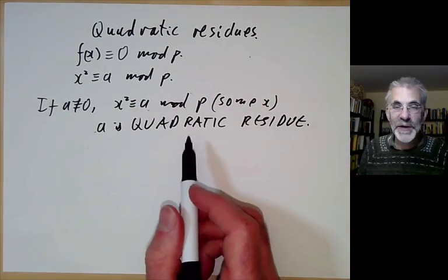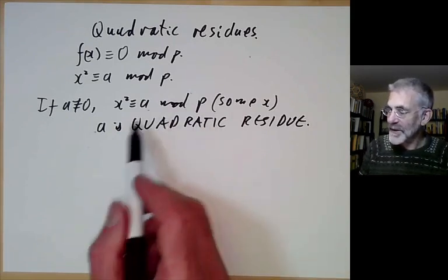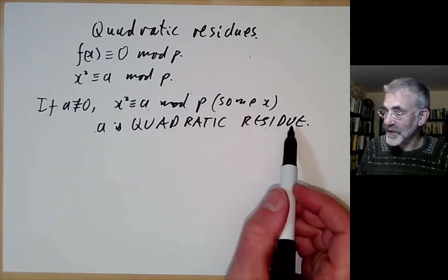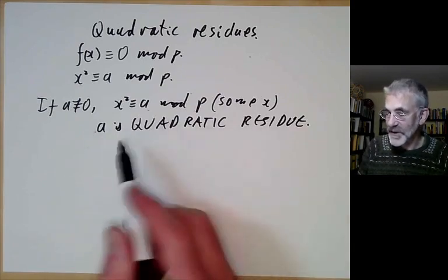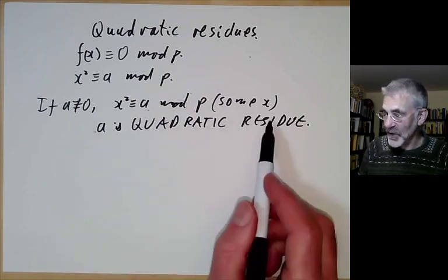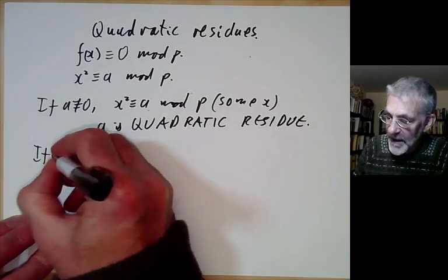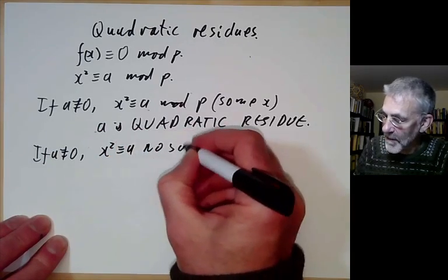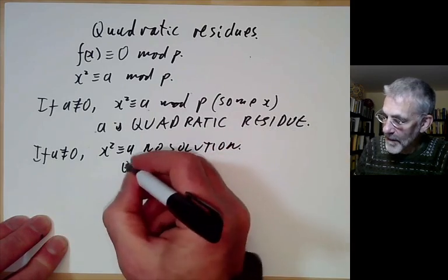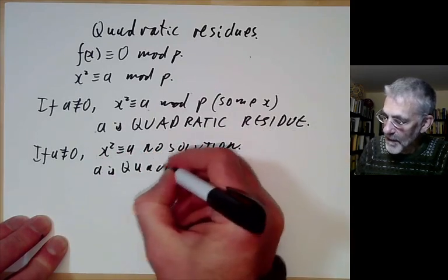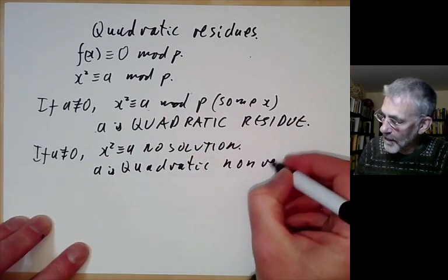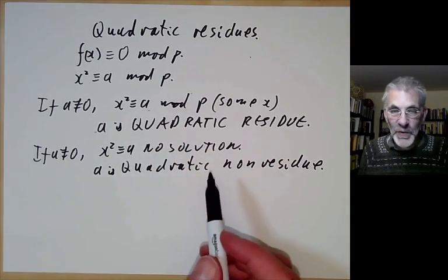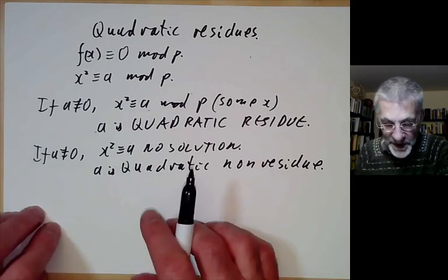The name 'quadratic residue' is really just a fancy way of saying it's a square. 'Quadratic' means it's a square, and 'residue' means we're taking it modulo p. So quadratic residue is just a slightly long-winded way of saying it's a square modulo p. If a is not zero and x² ≡ a has no solution, then a is a quadratic non-residue. I often forget to put the word 'quadratic' in, so be warned.